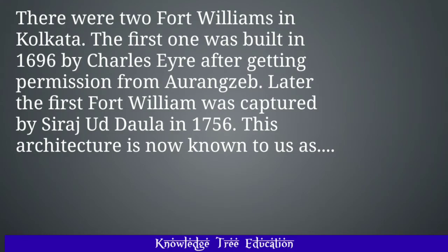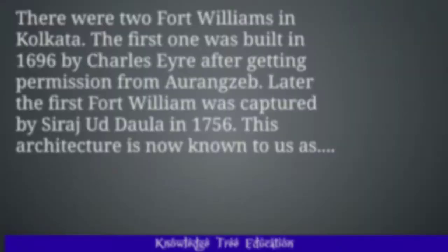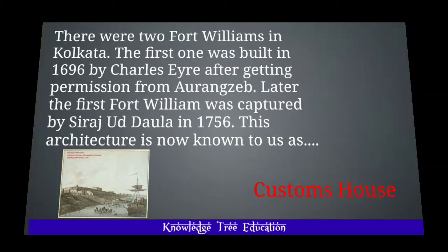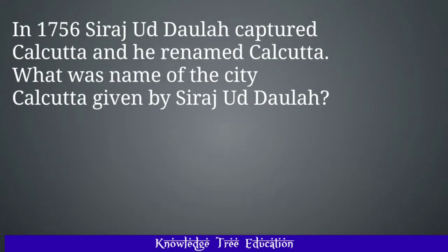There were two Fort Williams in Kolkata. The first one was built in 1696 by Charles Eyre after getting permission from Aurangzeb. Later, the first Fort William was captured by Siraj ud-Daulah in 1756. This architecture is now known to us as the Customs House. In 1756, Siraj ud-Daulah captured Calcutta and renamed it. What was the name given by Siraj ud-Daulah? And the answer is Alinagar.